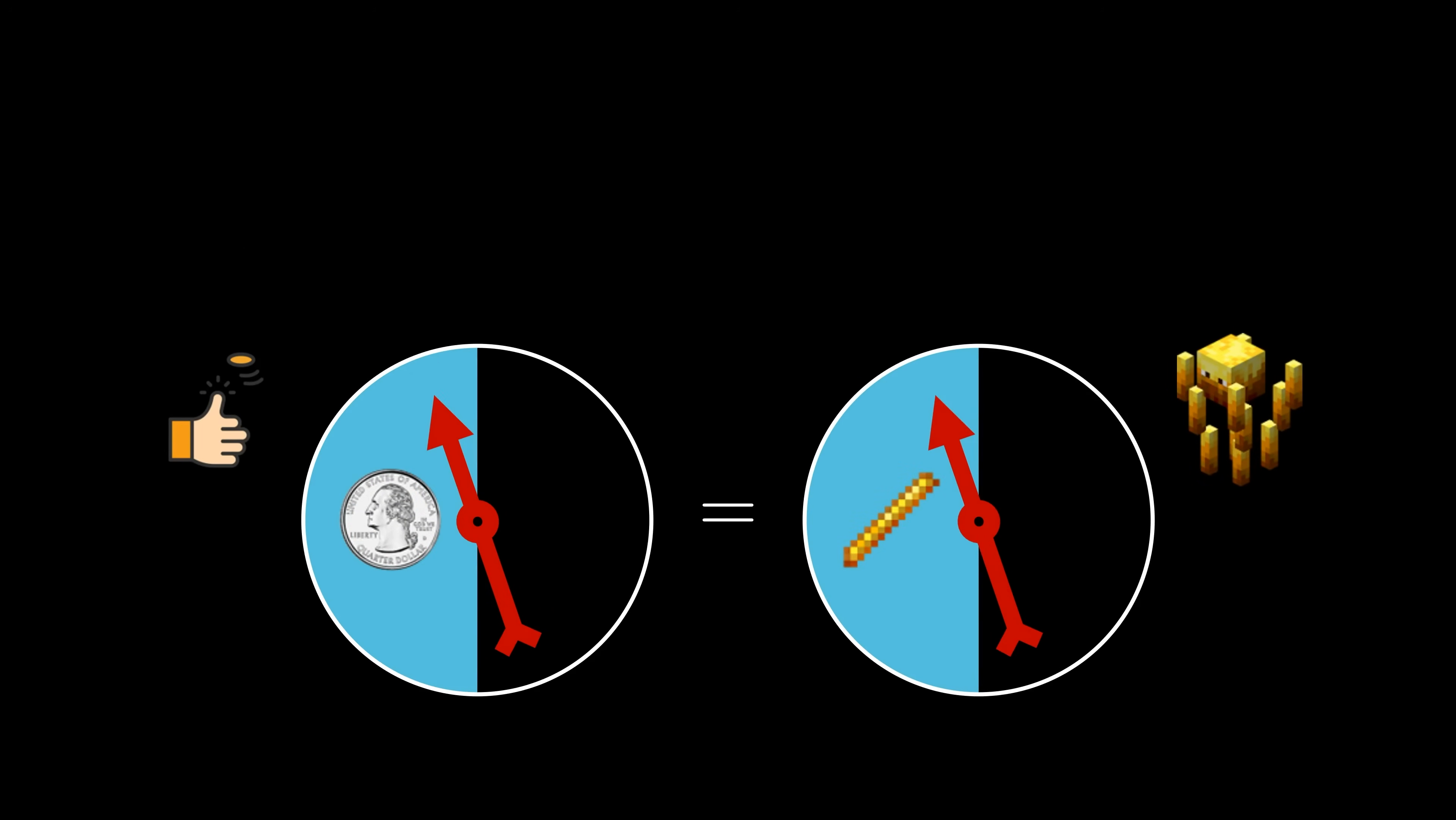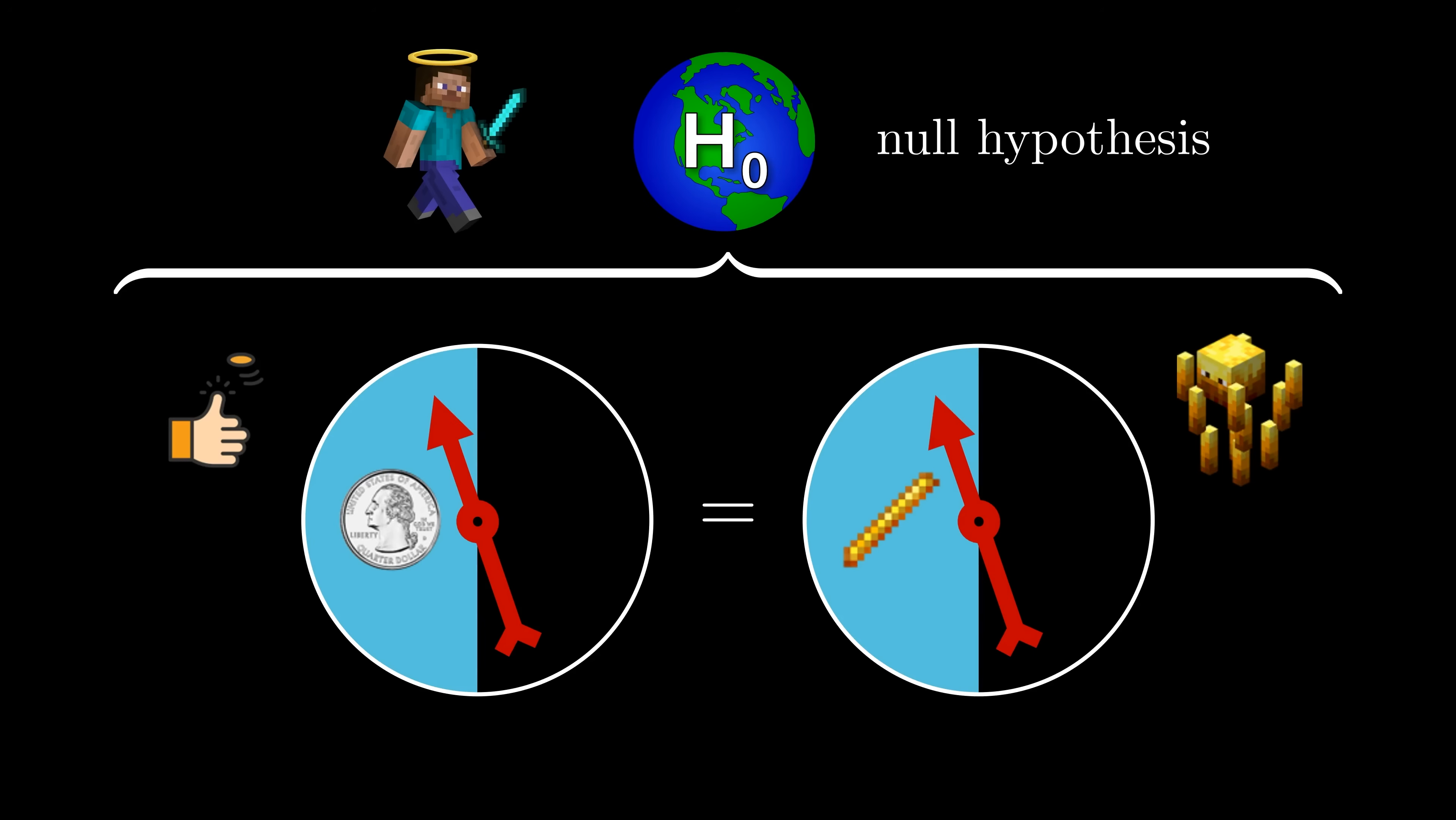Notice how this coin flipping scenario is exactly the same as the blaze problem that we saw at the beginning of the video. In other words, the model of flipping a fair coin and counting the number of heads is equivalent to watching a non-cheating player kill blazes and counting the number of blaze rods.